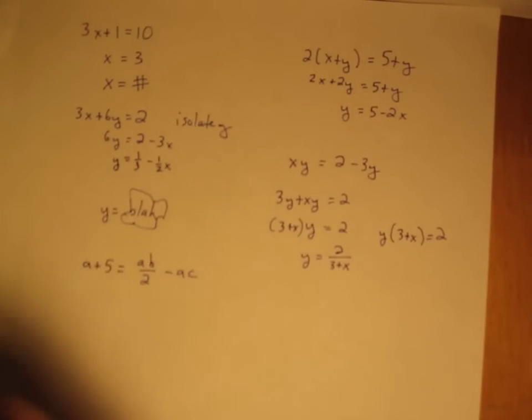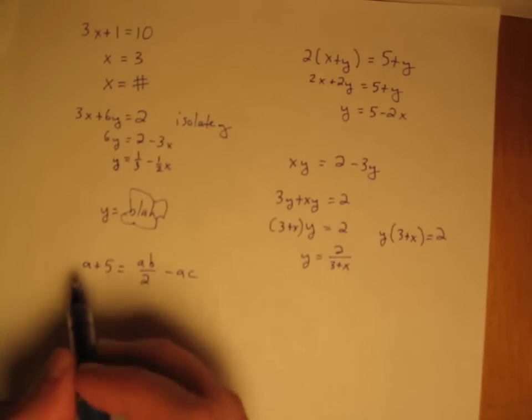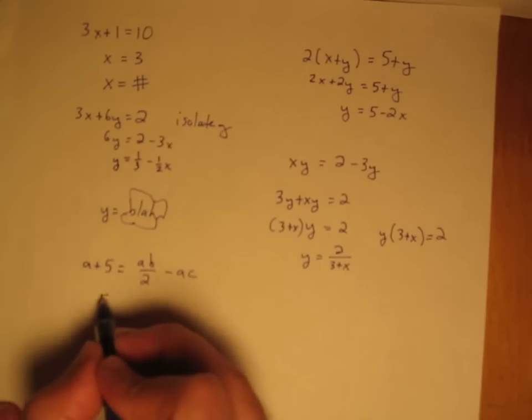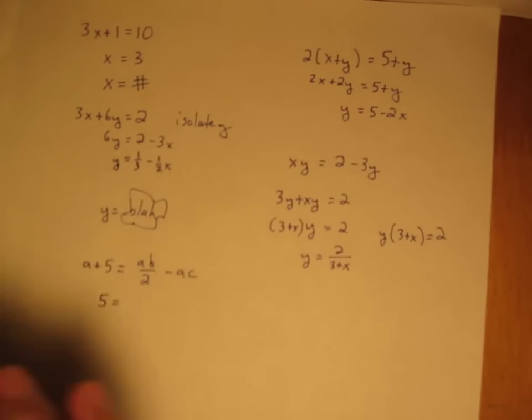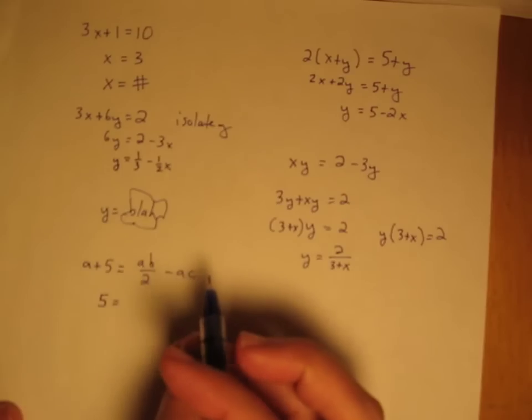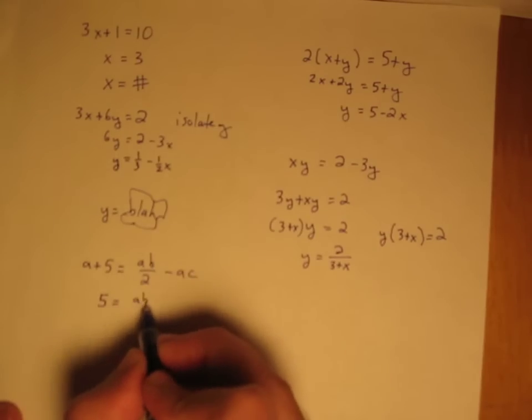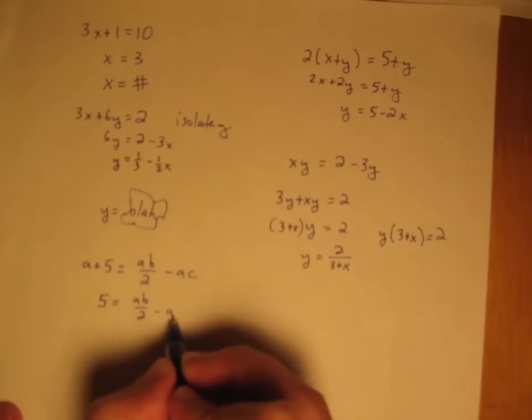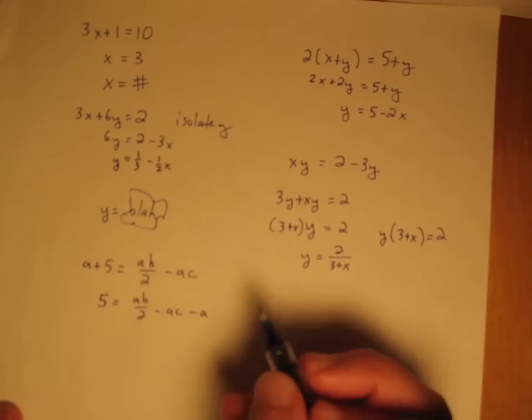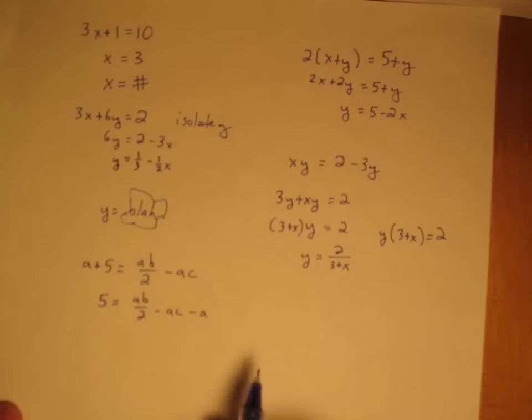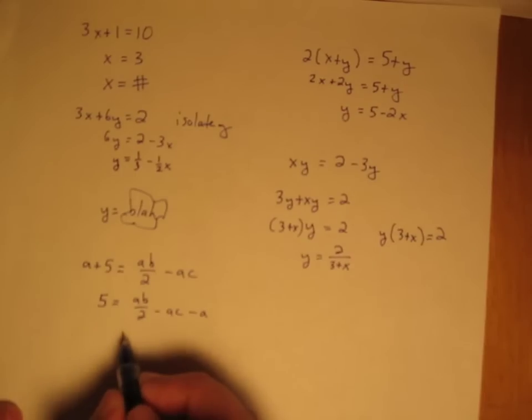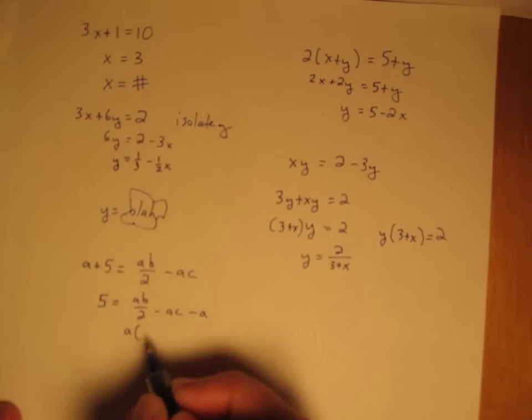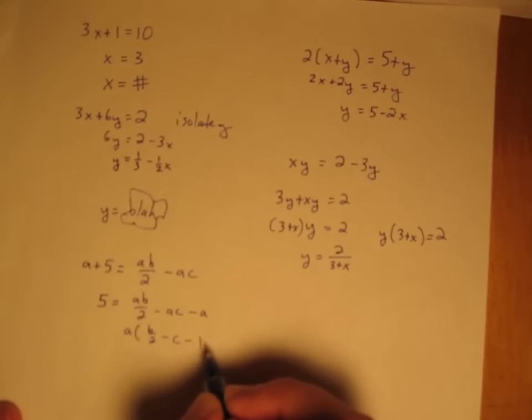So everything with an a is going to come over here and everything not will send over there. Or actually maybe it's easier to send all the a's over here. Equal signs don't care which side you're happening on. So we get ab over 2 minus ac minus a. Same song and dance with pulling out a factor of a. So pull out an a, b over 2 minus c minus 1, careful there.